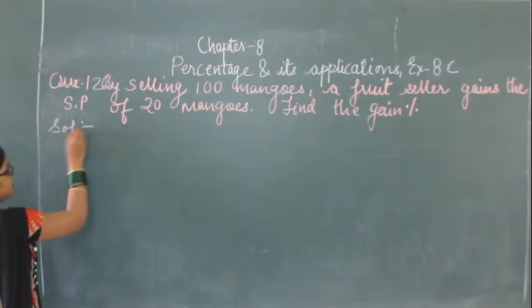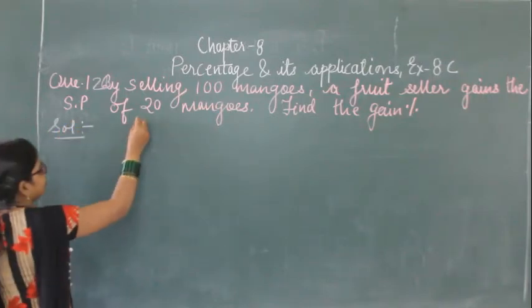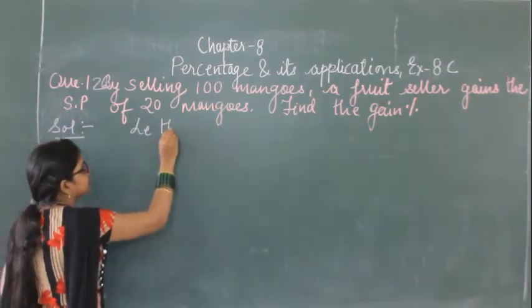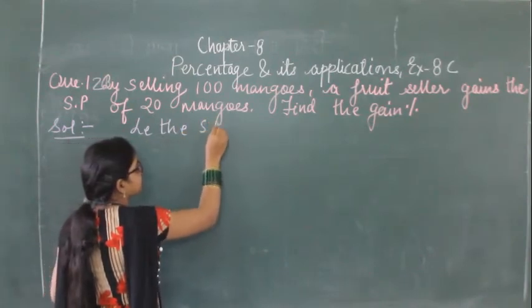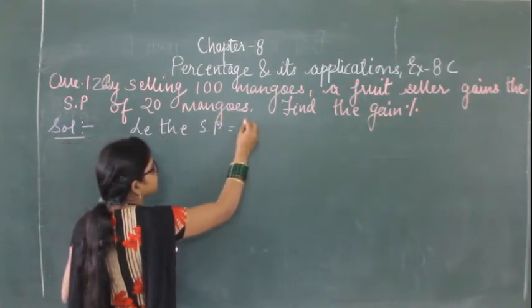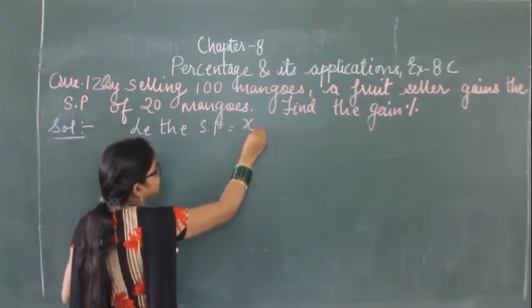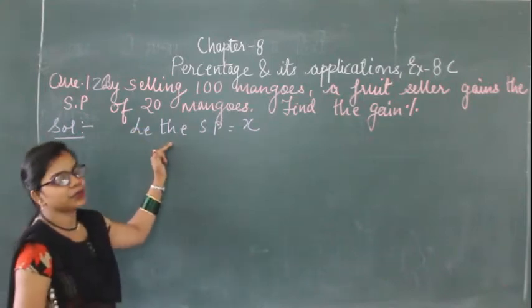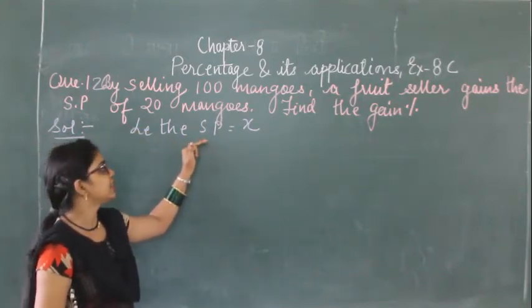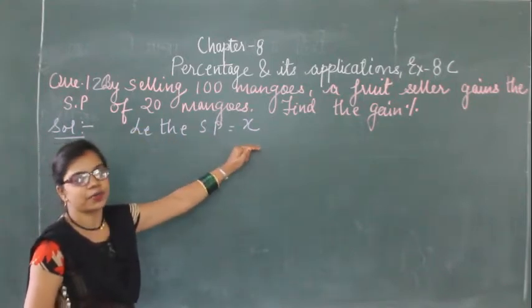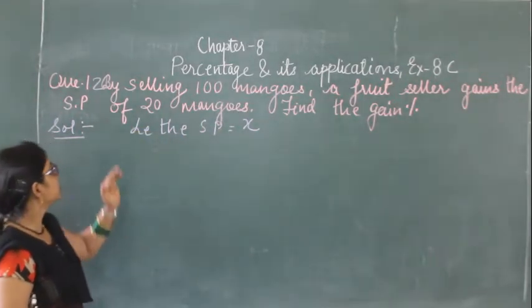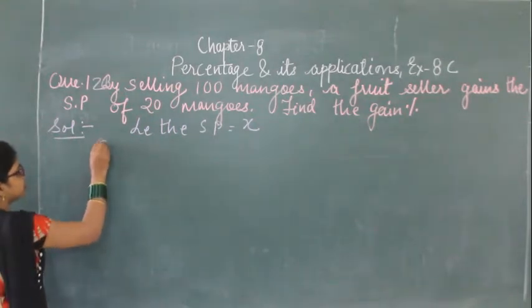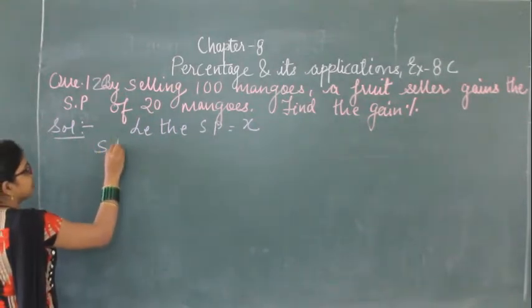Let the selling price of one mango be X. So the selling price of 100 mangoes will be 100X.